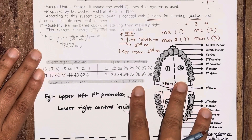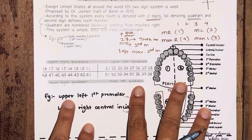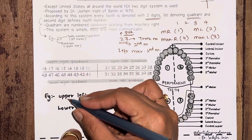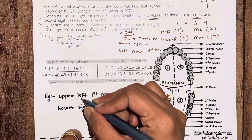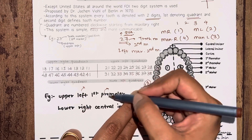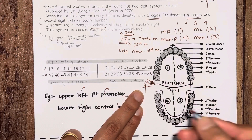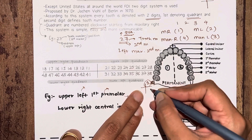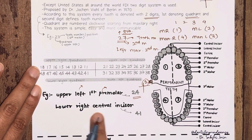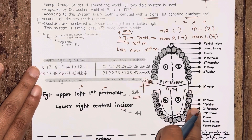For example, what is the FDI notation for the upper left first premolar? The upper left is the second quadrant, so two is the quadrant number. The first premolar is tooth number four, so it is written as '24'. Similarly, for the lower right central incisor: lower right is the fourth quadrant, and central incisor is number one, so it is written as '41'. This is how the FDI system works for the permanent dentition.